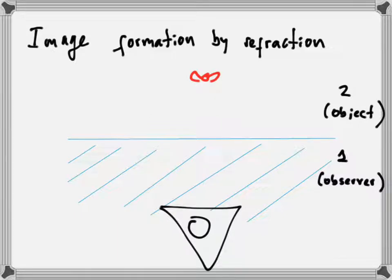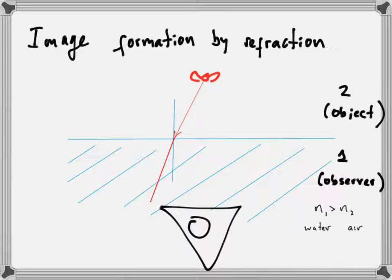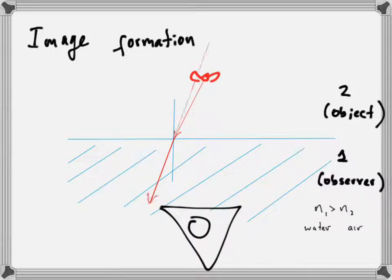The object — let's say a fly — is placed in medium number two, which is air. We have the observer in medium number one. One light ray comes from the fly, hits the surface of the water, and gets refracted. Since water has a bigger index of refraction than air, that light ray bends towards the normal and therefore seems to be coming from a different direction for the observer.